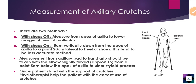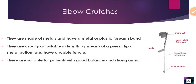It is the responsibility of the physiotherapist to train the patient for the correct use of the crutches. Elbow crutches are made of metal and have a metal or plastic forearm band, are usually adjustable by press clip or metal button, and have a rubber ferrule. These are suitable for patients with good balance and strong arms.